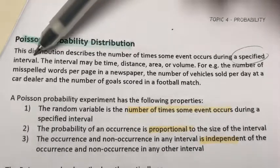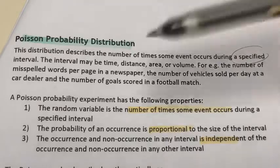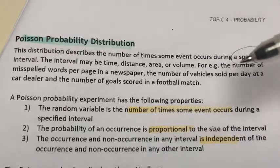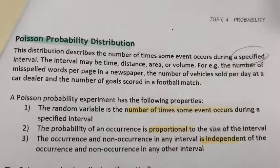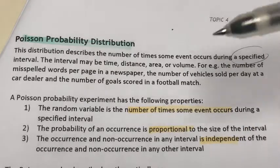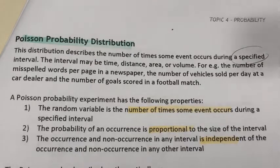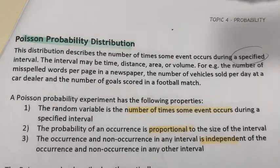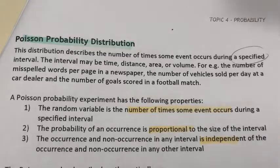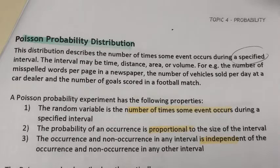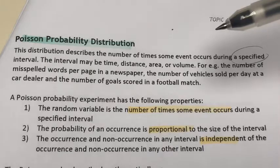For a binomial distribution, there are four characteristics. First, there are only two outcomes. Second, n is a fixed number of trials. Third, there is a probability of success, pi, which is the same in all trials. And finally, there is independence — the outcome of one trial does not affect the outcomes of other trials.